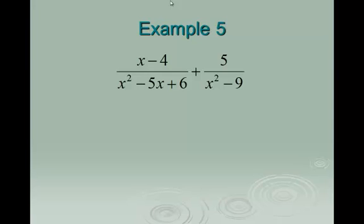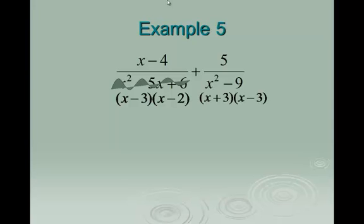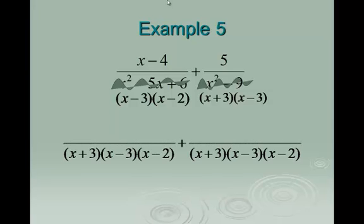On the next example, first we have to factor these denominators to see what the factors are. The first denominator is a trinomial — using the trinomial method: what multiplies to make 6 and adds up to negative 5? That's negative 3 and negative 2, so the factors are x minus 3 and x minus 2. The next denominator contains perfect squares: x squared factors as x and x, and negative 9 breaks up into positive 3 and negative 3, giving x plus 3 and x minus 3. The product of all unique factors is our common denominator. Since x minus 3 appears in both fractions, we list it only once: x plus 3, x minus 3, x minus 2.